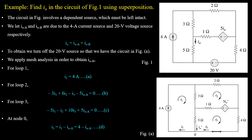In another example, we have to find the current I0 using the superposition principle. Analyzing the given circuit, it has both independent and dependent sources: one independent current source, one independent voltage source, and one dependent voltage source. Since the dependent source voltage depends on I0, it is left unchanged. Corresponding to the two independent sources, I0 = I0A + I0B, where I0A is the current due to the 4 ampere current source and I0B is the current due to the 20 volt voltage source. As step 1, we turn off the 20 volt voltage source and find I0A using mesh analysis.